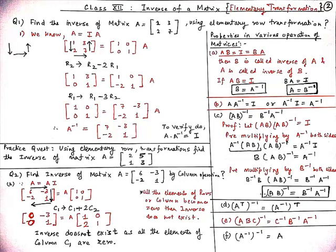Our first question for today: find the inverse of matrix A which is equal to [[1, 3], [2, 7]] using elementary row transformation. In row transformation, we write A equal to IA. Watch and listen carefully — see the arrow mentioned in matrix A which is in anti-clockwise direction. This is the procedure we perform by applying row operations to make it an identity matrix.